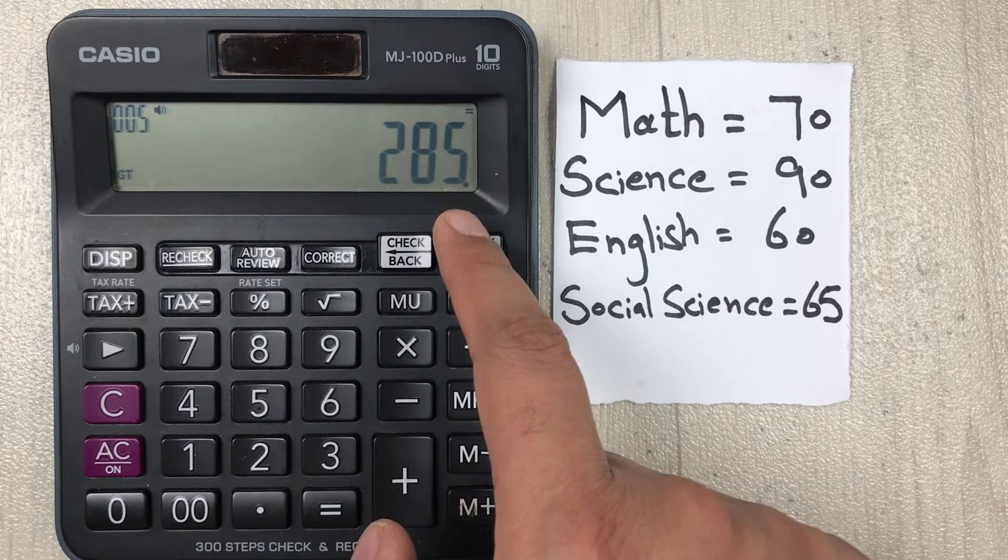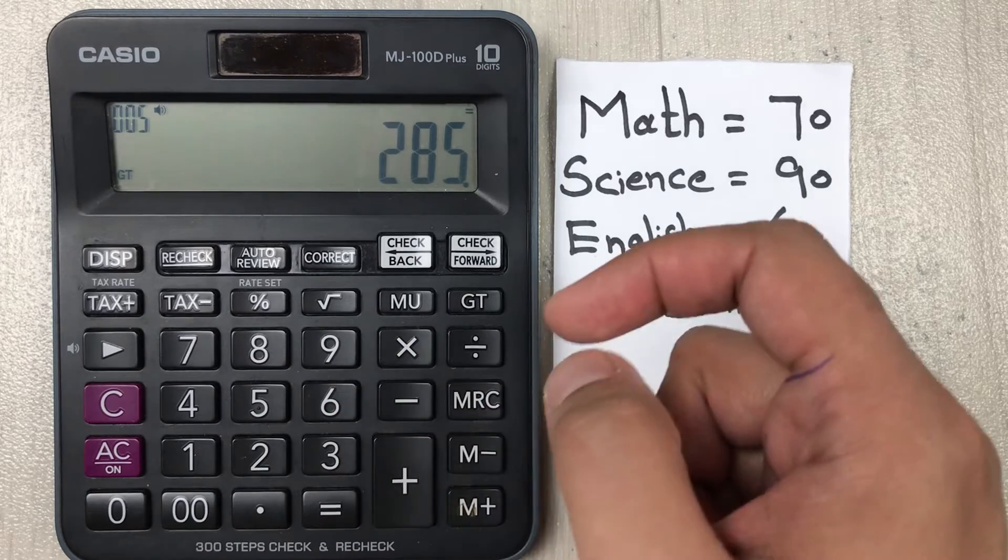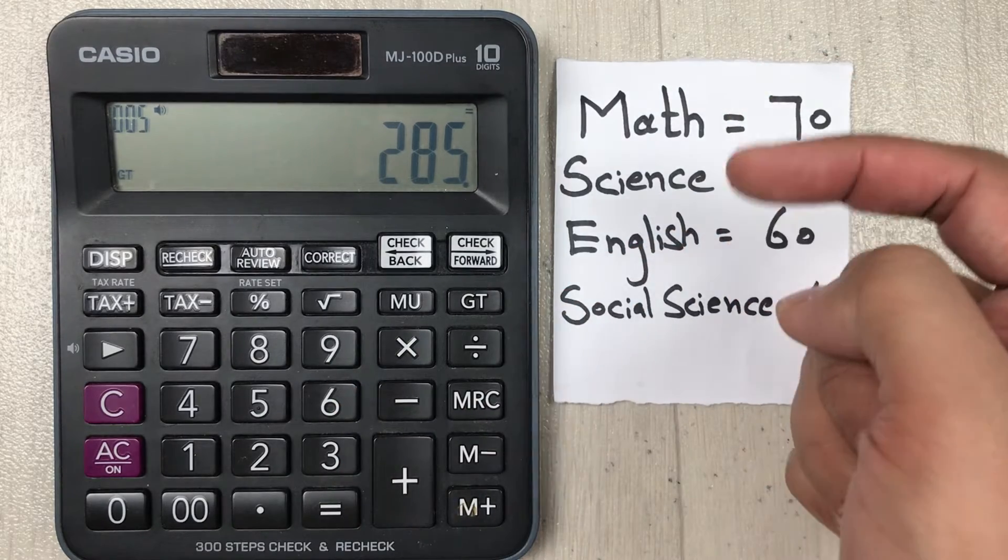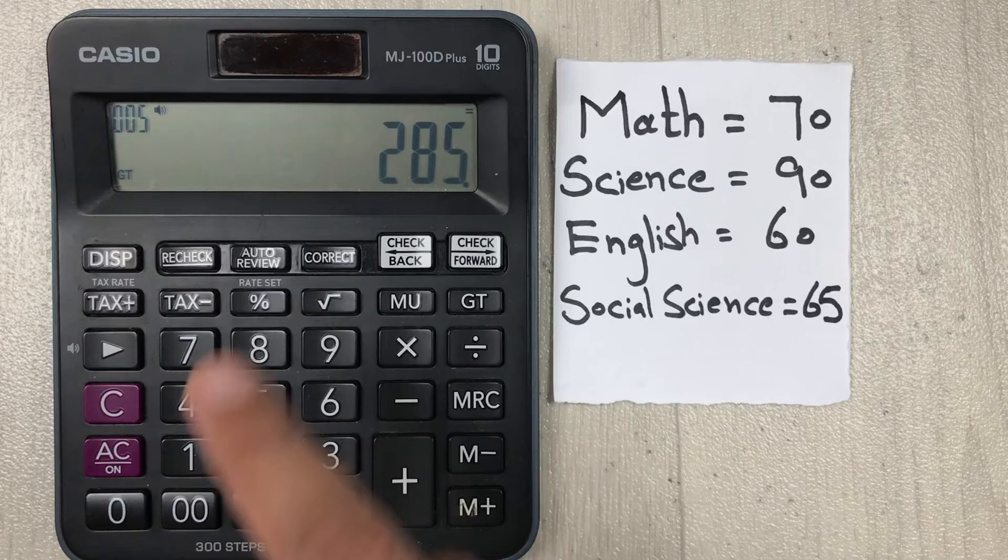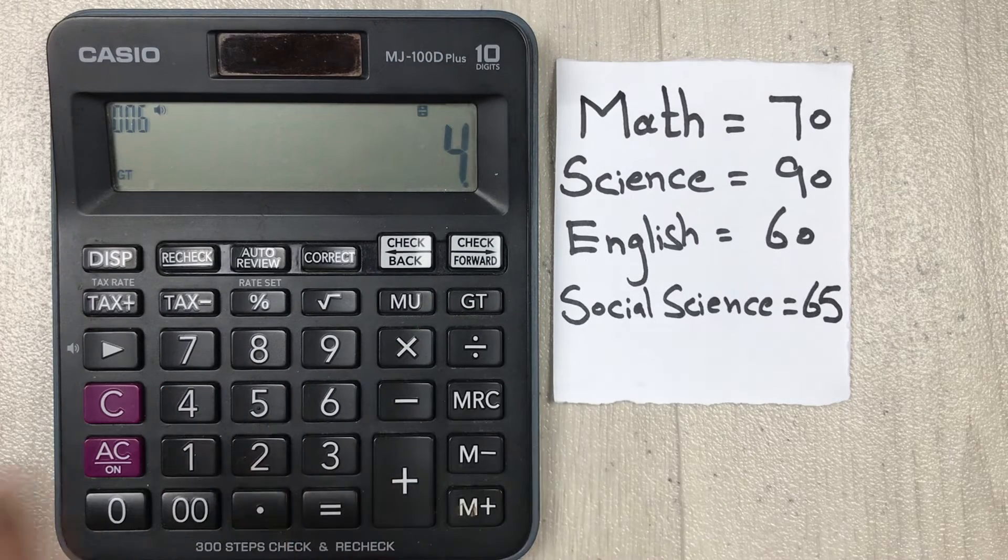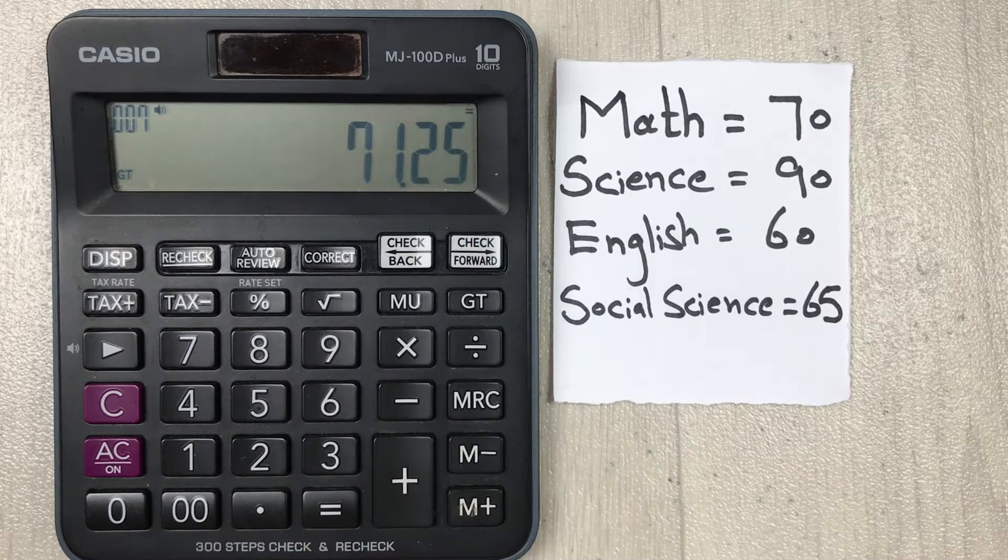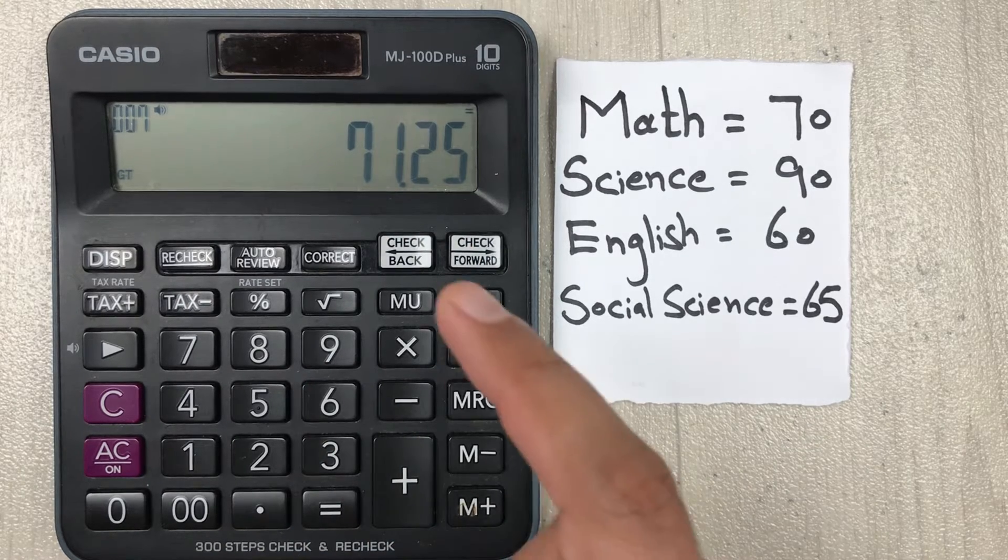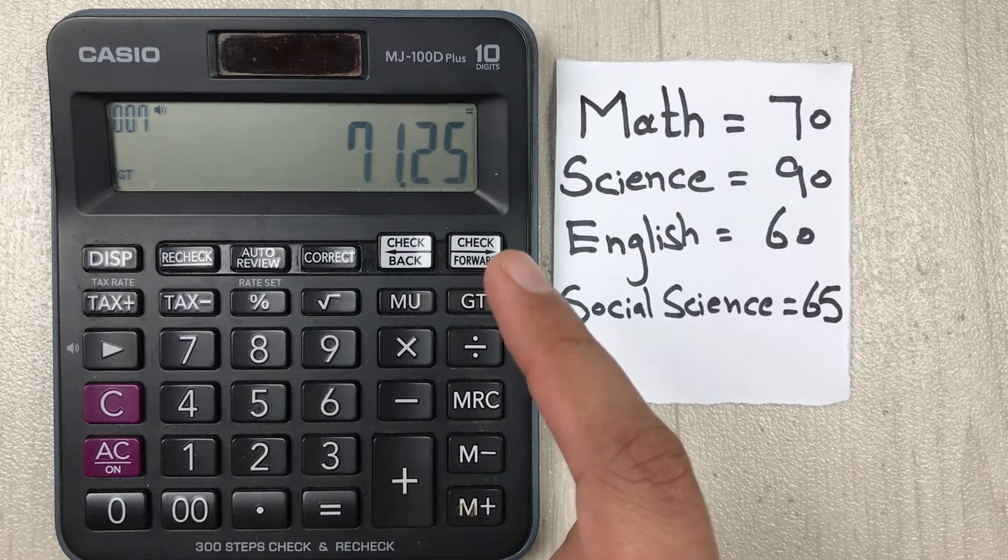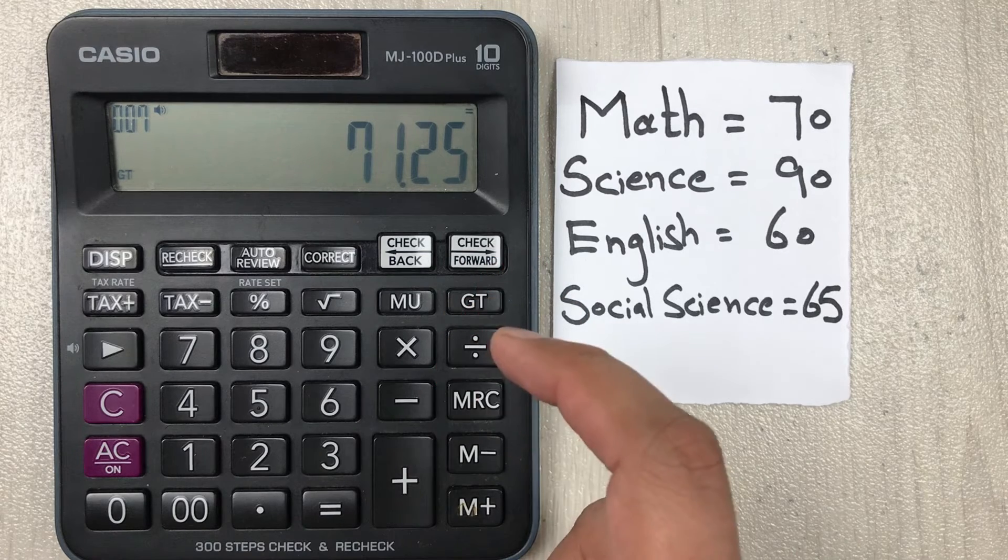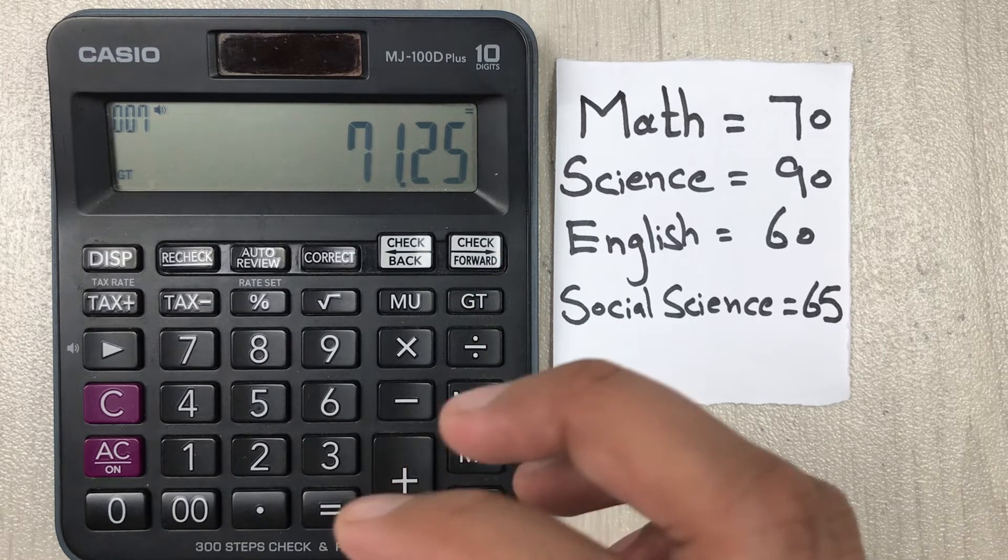So 285 divided by 4, and then we press the equal button. So guys, here is our final answer. 71.25 are your average marks.